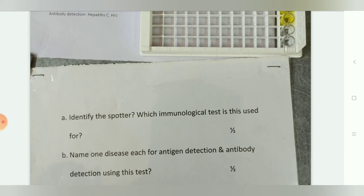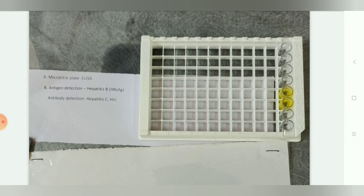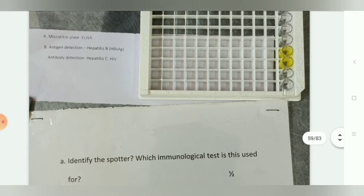Name one disease each for antigen detection and antibody detection using ELISA. For antigen detection, ELISA is used for Hepatitis B — specifically HBs antigen detection. For antibody detection, it is used for Hepatitis C and HIV.